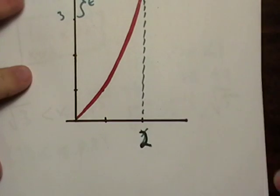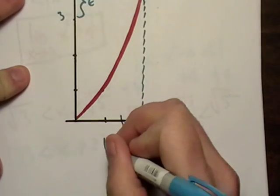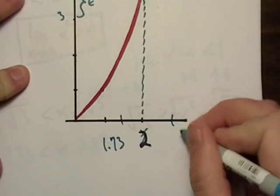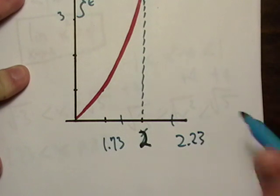So let's go back to my graph right here. I've got 2, and I've got 1.73, and I've got 2.23.